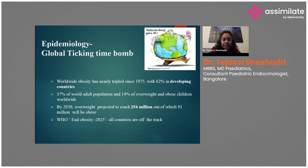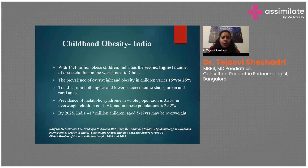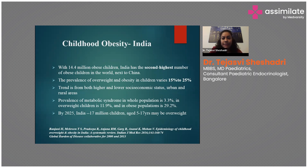In the Indian scenario, India has the second highest number of obese children in the world, next only to China. The prevalence of overweight and obesity varies from 15 to 25 percent. This trend is not limited to higher socioeconomic status — it extends to lower socioeconomic groups and rural areas as well, because junk food, processed food, and packaged food are available at cheaper costs.